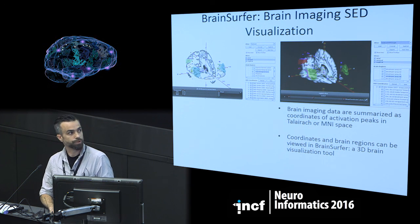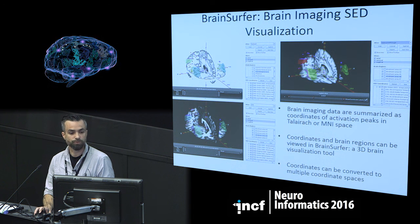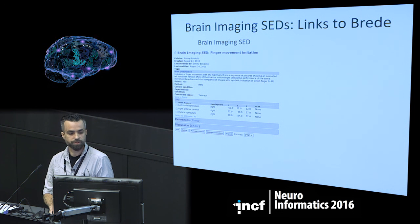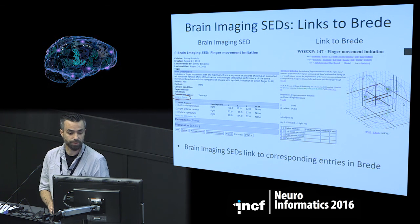Brain imaging data is stored in BodeB as coordinates of activation peaks in Talairach or MNI space. We've developed a 3D visualization tool called Brain Surfer to view these along with different brain regions, and you can convert them from MNI to Talairach space and navigate around the brain. Each page describing brain imaging data has a description of the experiment, the control and experimental conditions, the method used, the coordinate space, a list of coordinates, and a link to more detailed information in the BRADA database.